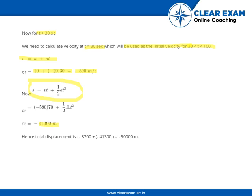get the distance as 41,300 m. Hence, the total displacement is the sum of all three distances, which comes to 50,000 m.